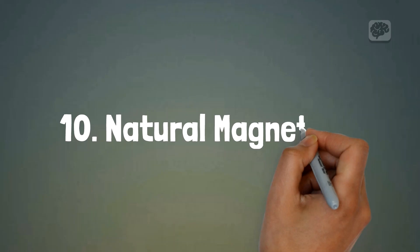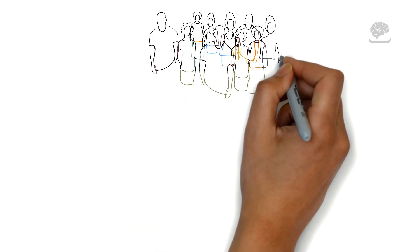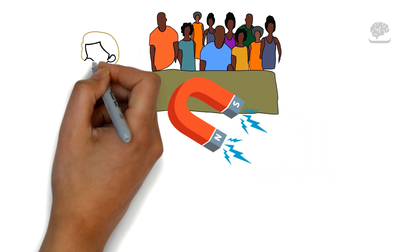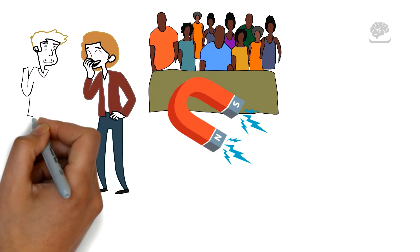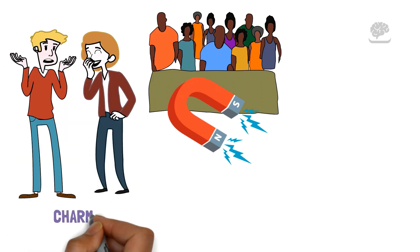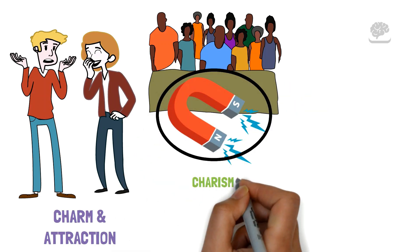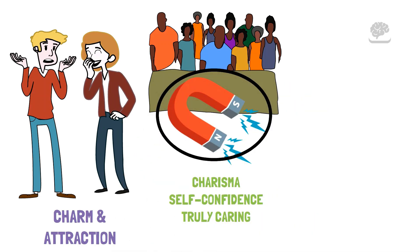Number 10: Natural Magnetism. Natural magnetism is a special quality that pulls people to you like a magnet. In social situations, you might see that others easily come close to you wanting to talk and spend time with you. This shows your natural charm and attraction. Your magnetism comes from a mix of things like charisma, self-confidence, and truly caring about others.